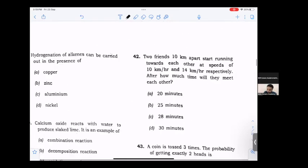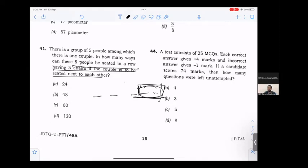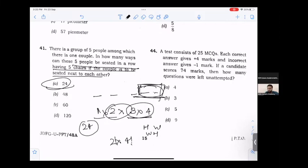There is a group of 5 people. In how many ways can these 5 people be seated in a row having 5 chairs if the couple is to be seated next to each other? Treating the couple as one unit, we have 4 units that can be arranged in 4 factorial ways. The couple themselves can be arranged in 2 ways. So 4 factorial into 2 equals 24 into 2 equals 48 ways.